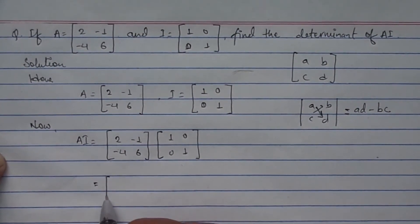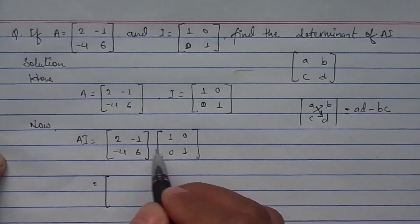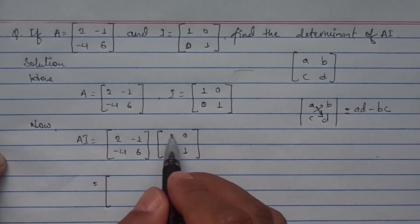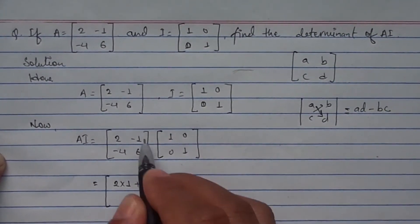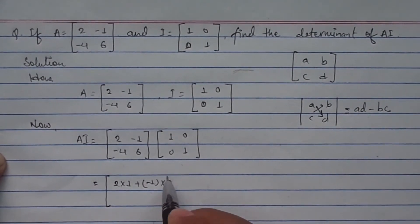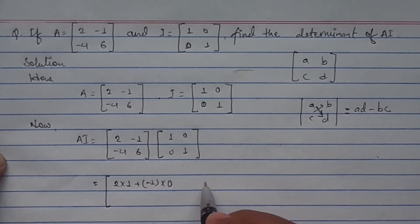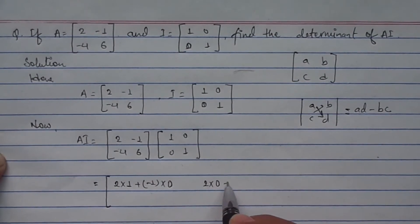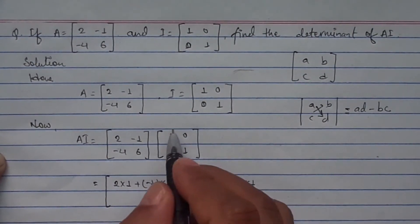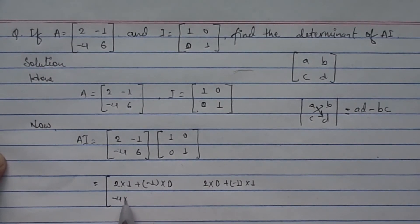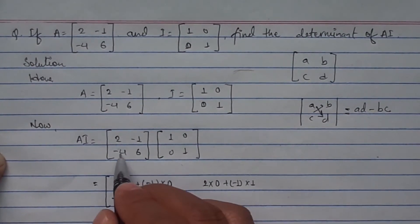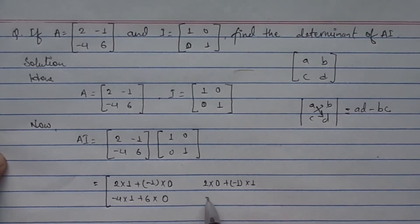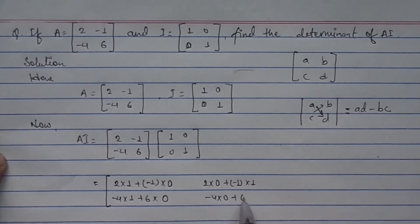Now I'm doing it directly. Rows with columns: first row, first column — 2×1 plus (-1)×0. First row, second column — 2×0 plus (-1)×1. Second row, first column — (-4)×1 plus 6×0. Second row, second column — (-4)×0 plus 6×1.